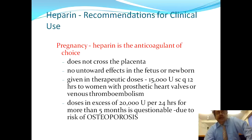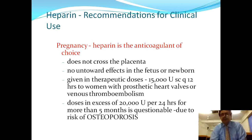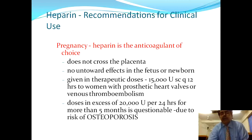In pregnancy, heparin is the anticoagulation of choice. It does not cross the placenta and has no side effects on the fetus or newborn. It is given in therapeutic doses of about 15,000 units subcutaneously every 12 hours to women with prosthetic heart valve diseases or venous thromboembolism. However, doses in excess of 20,000 units per 24 hours for more than 5 months may cause osteoporosis.